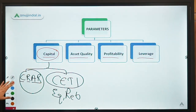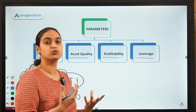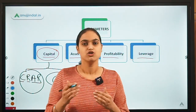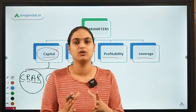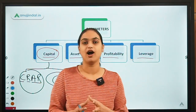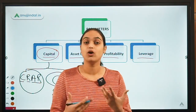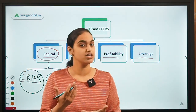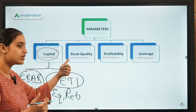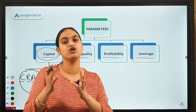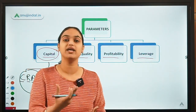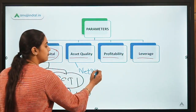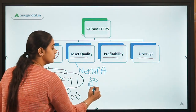Next is asset quality. The loans which banks lend are actually the assets of the banks — people will pay them back along with interest. It is important that good quality loans exist for banks to ensure healthy performance. Under NPAs, when loans are not recovered on time within prescribed limits, they are categorized as non-performing assets. Under asset quality, we check whether the loans are of good quality or are they turning into NPAs, using the net NPAs to advances ratio.